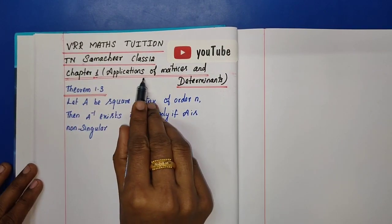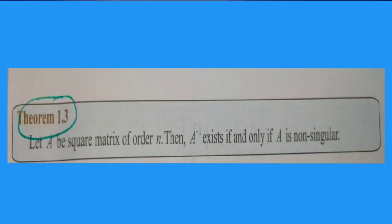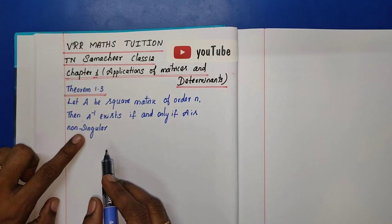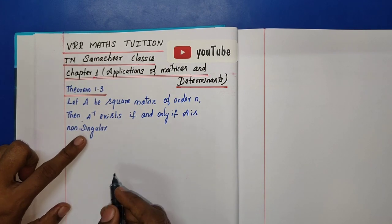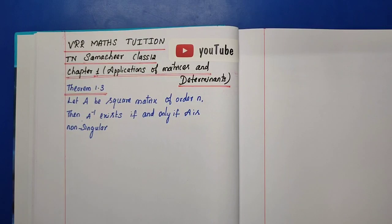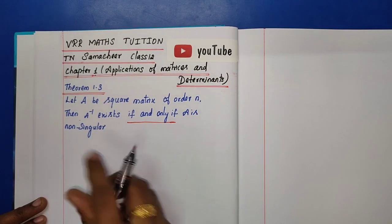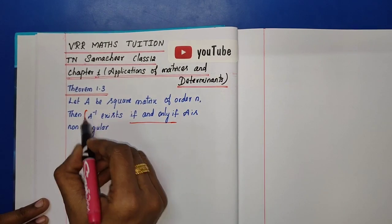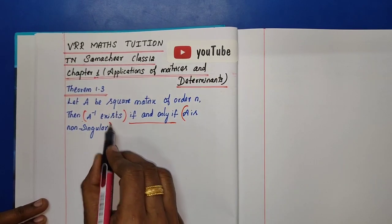Chapter 1: Applications of Matrices and Determinants. Theorem 1.3: Let A be a square matrix of order n. Then A inverse exists if and only if A is non-singular.